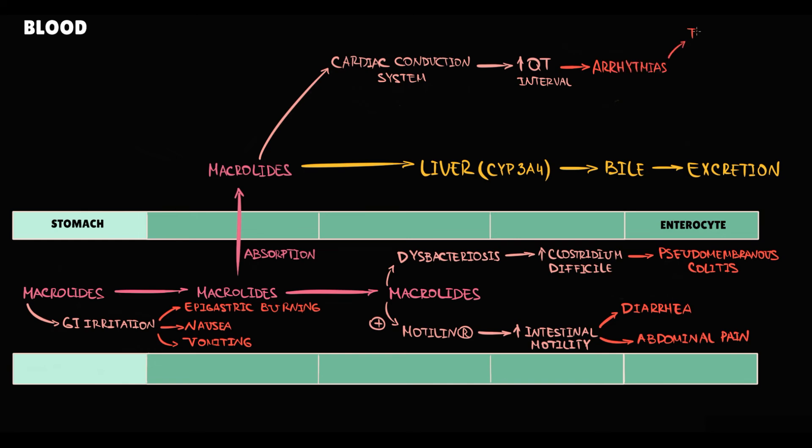Such as torsades de pointes, ventricular tachycardia, and ventricular fibrillation. By the way, torsades de pointes is the most common type of arrhythmia induced by macrolides.